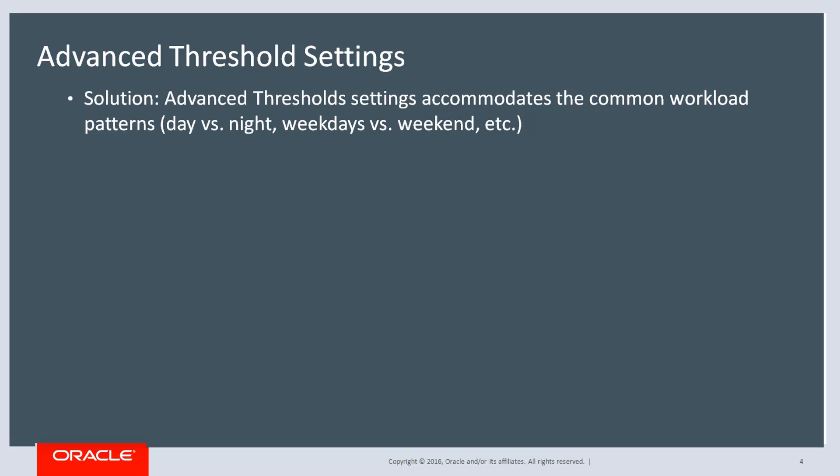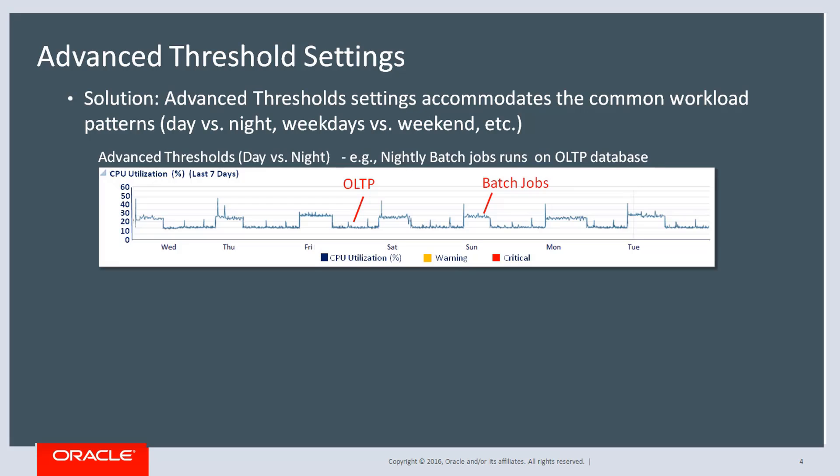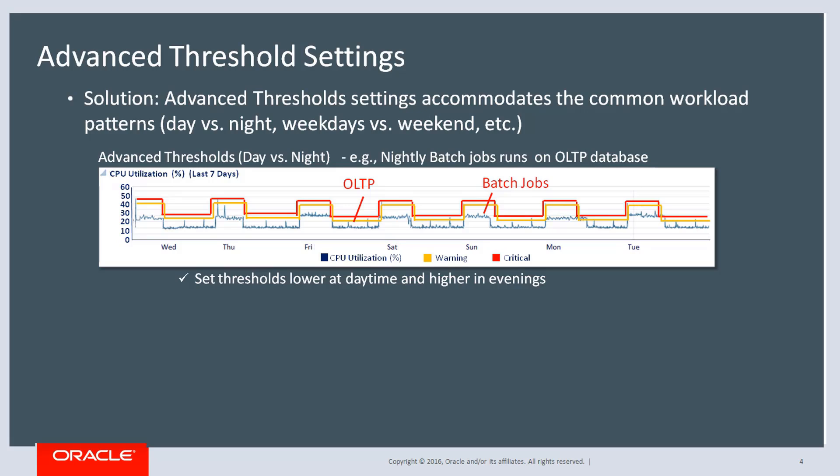Basically, instead of having fixed thresholds, advanced thresholds allow you to specify different threshold values for different times to match your workload patterns, such as day versus night or weekdays versus weekends. The typical use case is when you have a system that runs OLTP in the daytime but runs batch jobs in the evening and you want to monitor performance. In this case, you may want to set a lower threshold during the day and a higher threshold in the evening.